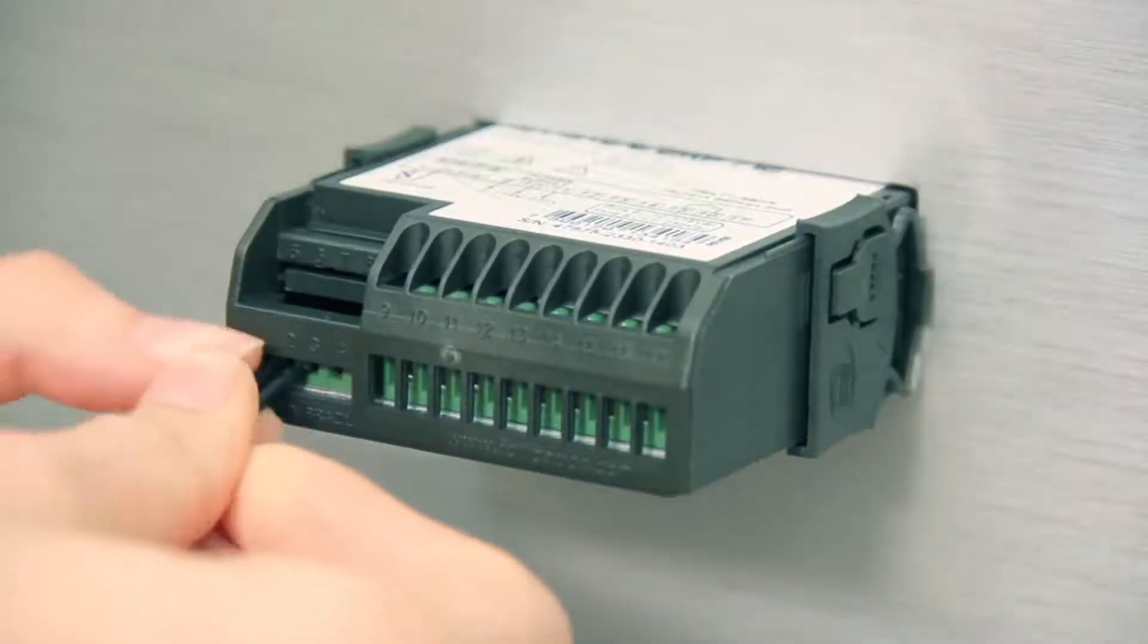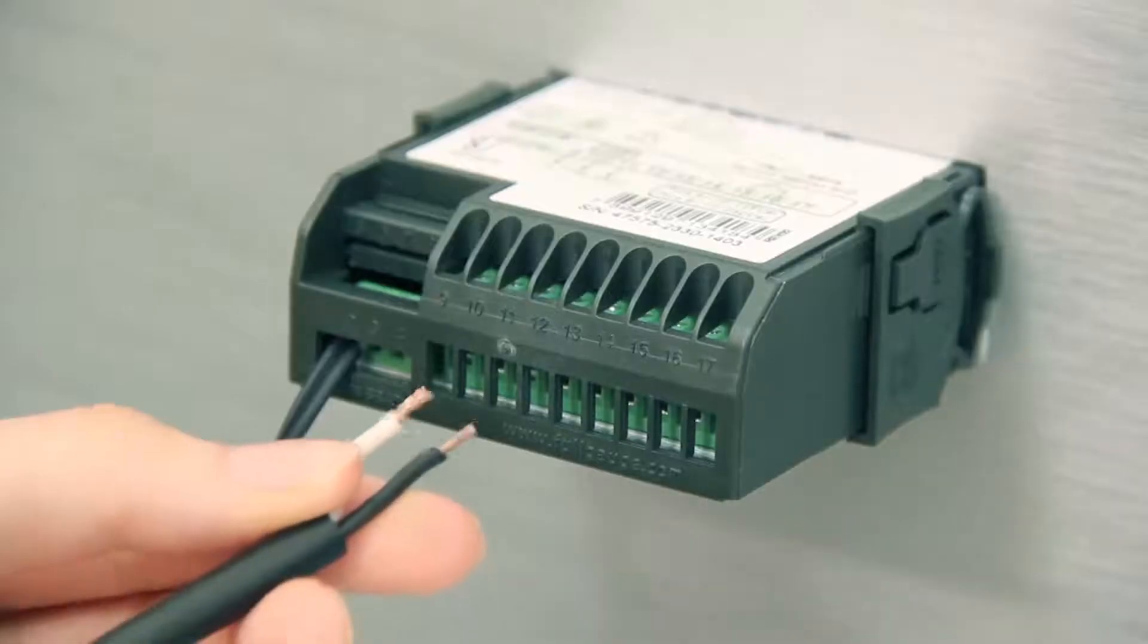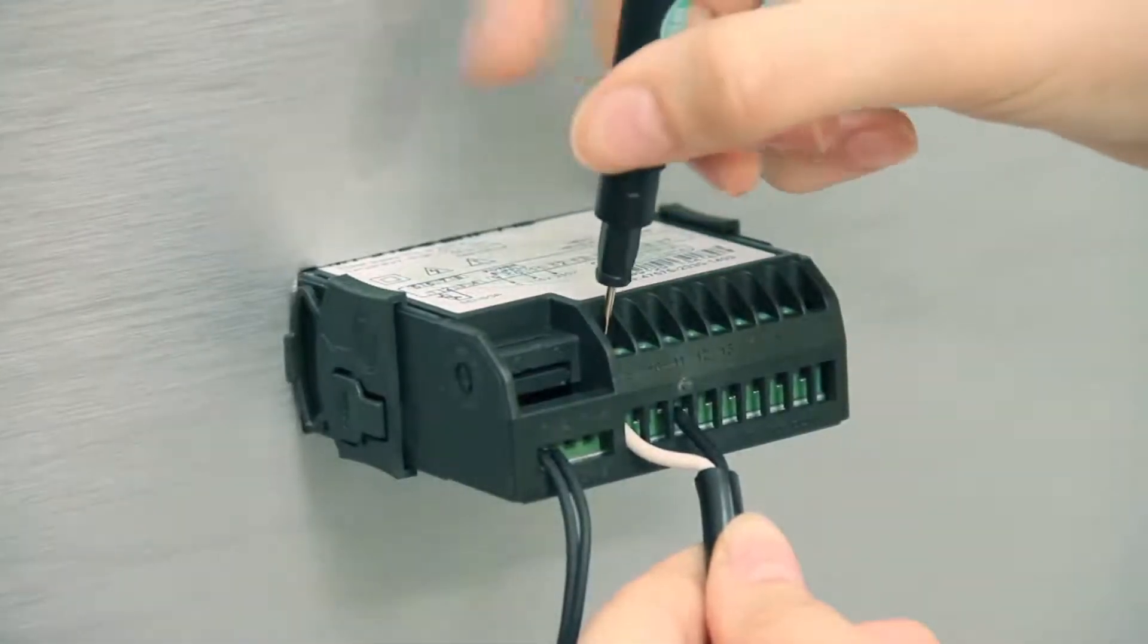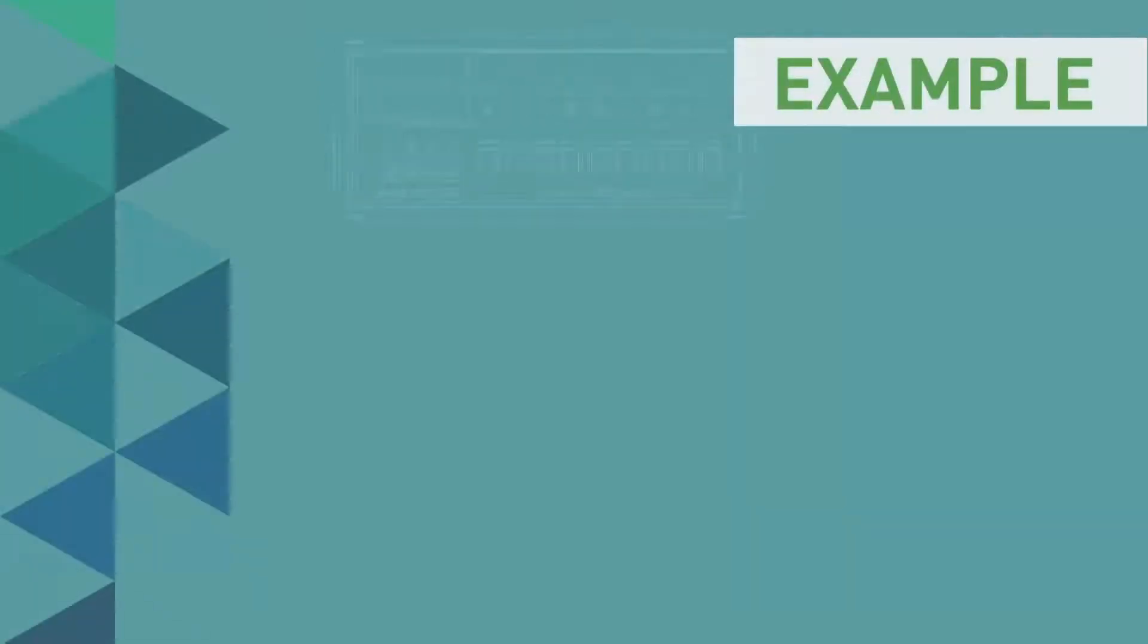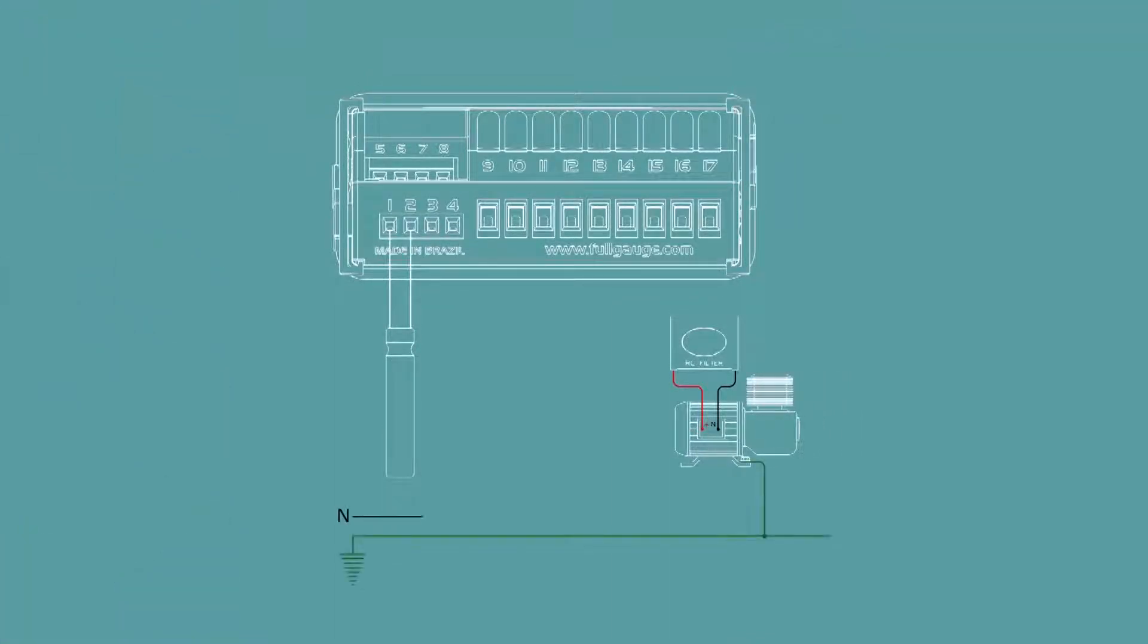We now present two installation examples of the MT512E 2HP. You must configure and install the instrument according to your needs. Cooling installation: Assuming power is less than 2 horsepower, a contact switch is not used. However, the RC filter is used. In this installation example, the supply is made with 127 volts AC.